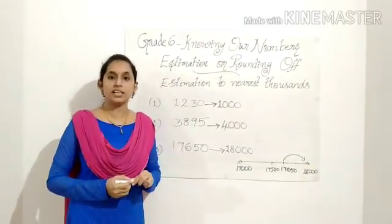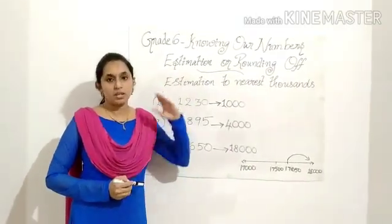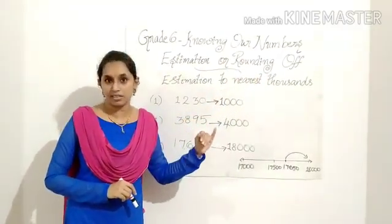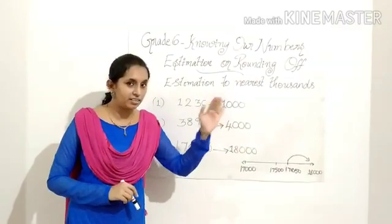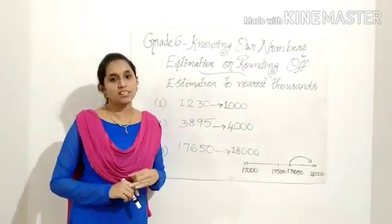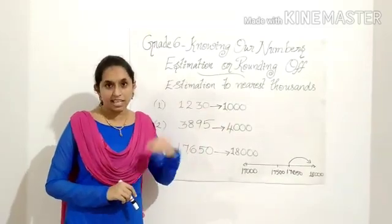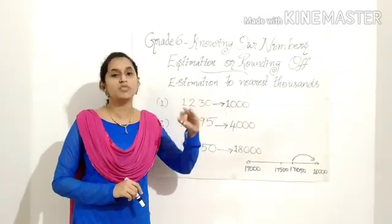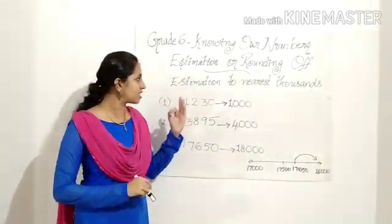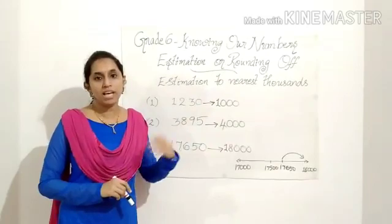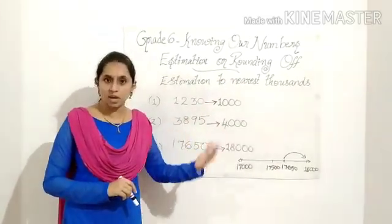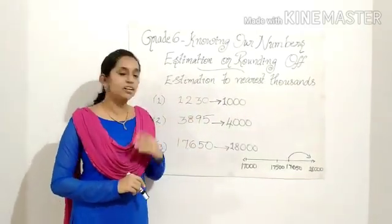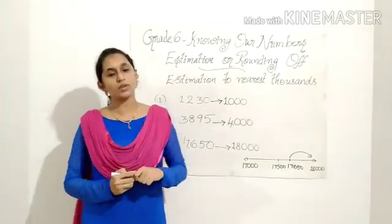In today's video we have studied three types of estimation. Estimation to nearest tens — where we look at only the last two digits and check multiples of 10, 20, 30, etc. Estimation to nearest hundreds — where we look at multiples of 100, 200, 300, etc. and consider the last three digits. And estimation to nearest thousands — where we check multiples of 1,000, 2,000, 3,000, etc. I hope all these are clear to you. That's all for today. Thank you, children.